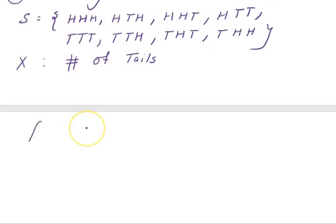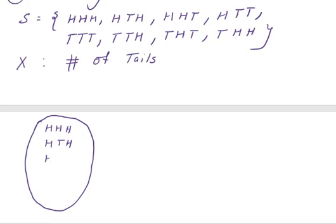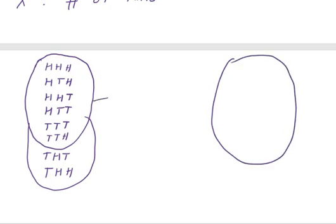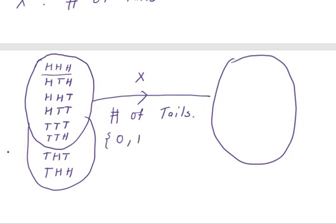The set of all possible outcomes includes HHH, HTH, HHT, HTT, THH, and others. The random variable X denotes the number of tails. For tossing three coins, X can take values 0 (e.g., HHH), 1 (one tail), 2 (two tails), or a maximum of 3 (TTT).